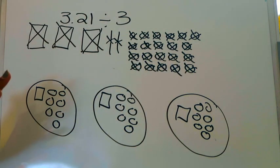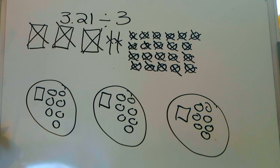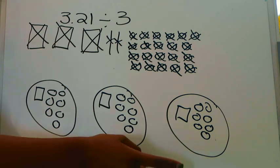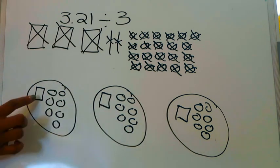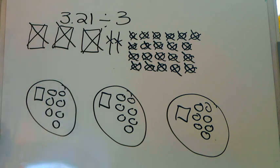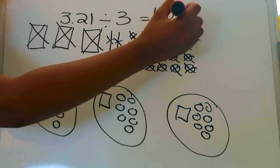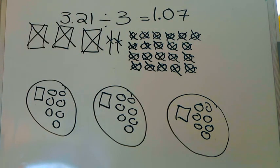I've now successfully distributed three and twenty-one hundredths into three groups using regrouping. Looking at just one group to find the quotient: there is one whole, no tenths, and one, two, three, four, five, six, seven hundredths. So the quotient to three and twenty-one hundredths divided by three is one and seven hundredths — that is my answer.